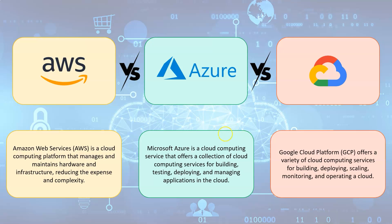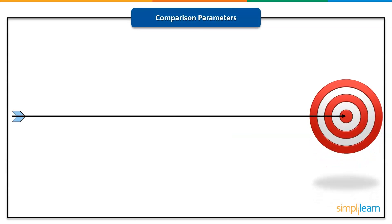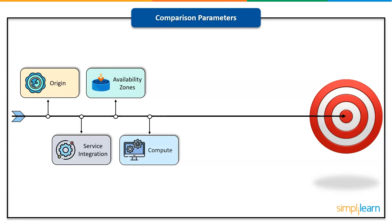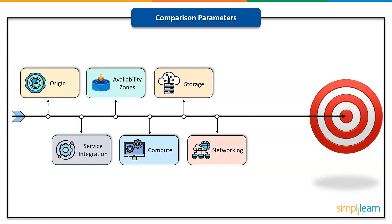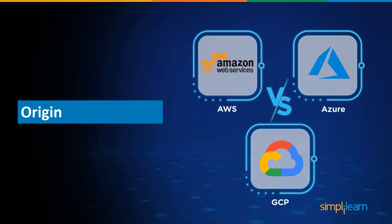Now let's move on to the comparison between AWS, Azure, and GCP. We will be comparing them based on a few major parameters like origin, service integration, availability zones, cloud tools such as compute, storage, and networking, as well as market share, pricing, and who uses them.